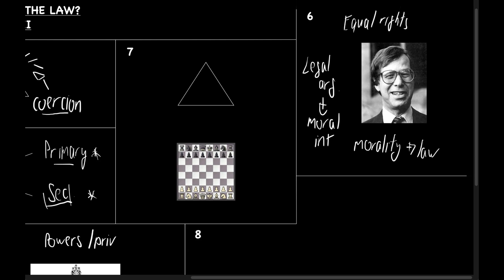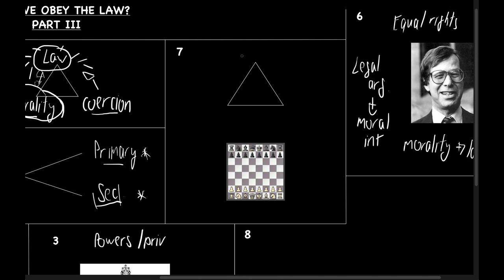Central to Dworkin's theory of law is the distinction between description, between interpretation, and between normativity.